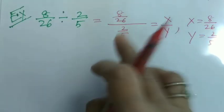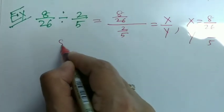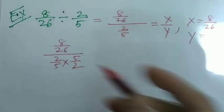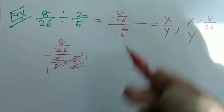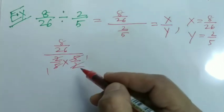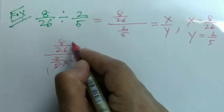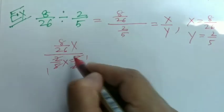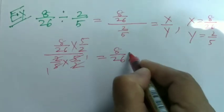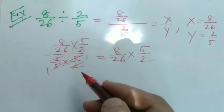For that we'll convert the denominator into 1. We'll have to multiply this 2 by 5 with 5 by 2. 8 by 26 divided by 2 by 5 into 5 by 2. As we are multiplying denominator with 5 by 2, according to the rule of equivalent fraction we'll have to multiply the numerator with the same fraction, 5 by 2.